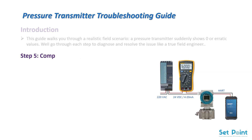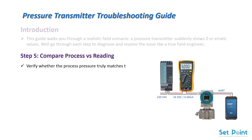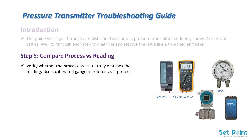Step 5: Compare process versus reading. Verify whether the process pressure truly matches the reading. Use a calibrated gauge as reference. If pressure exists but the transmitter shows zero, sensor damage is likely.